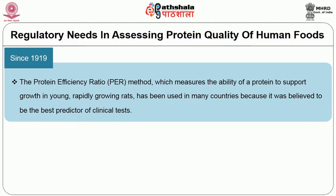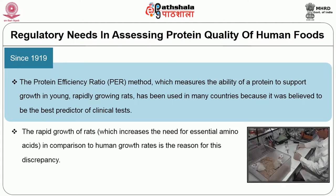Because the PER showed overestimation for animal proteins and underestimation for some vegetable proteins, it is not a proper way of assessing protein quality. The rapid growth rate of rats, which increases their need for essential amino acids compared to human growth rates, is the reason for this discrepancy.